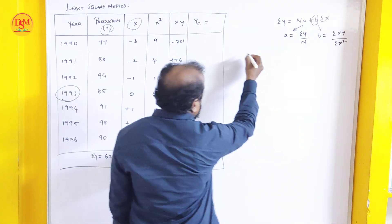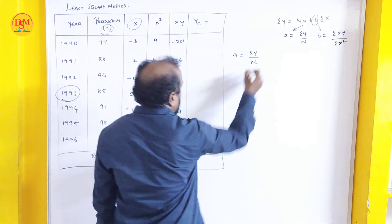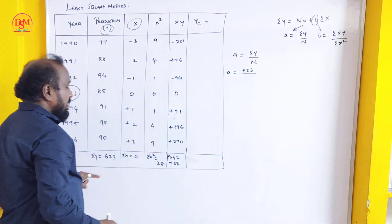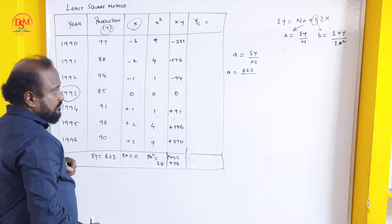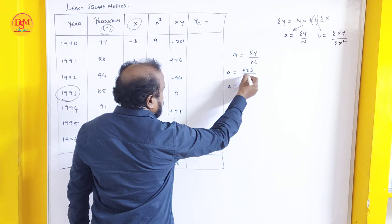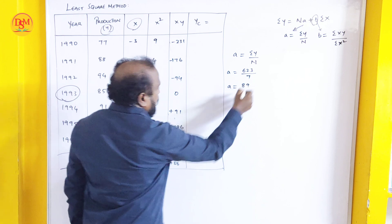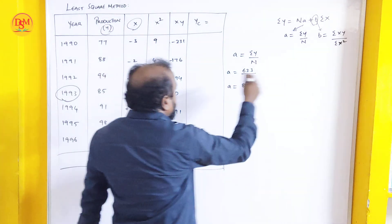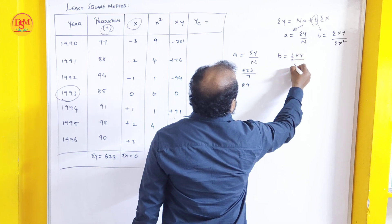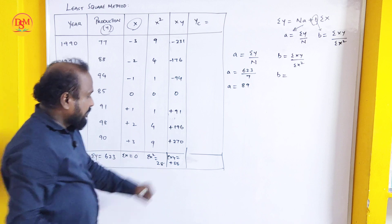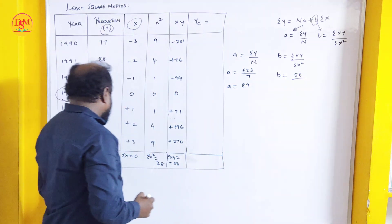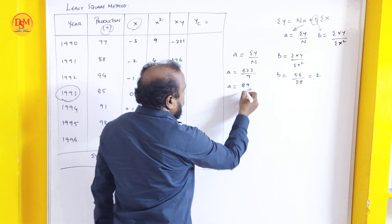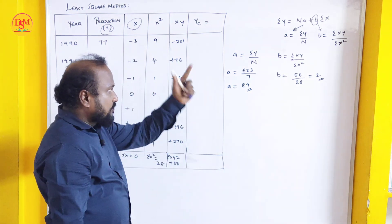We have calculated the totals. Next, we have to substitute in the formula. A is equal to sigma y by n. Sigma y total is 623, so A is equal to 623 divided by n. N is 1, 2, 3, 4, 5, 6, 7. Seven numbers. A is equal to 623 divided by 7 is 89. Next, b we have to calculate. B is equal to sigma xy by sigma x square. Sigma xy is 56 divided by sigma x square which is 28. B is equal to 2. We got a value 89, b value 2. We will substitute in that formula.